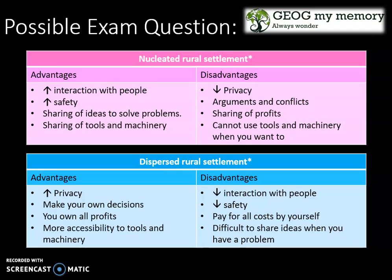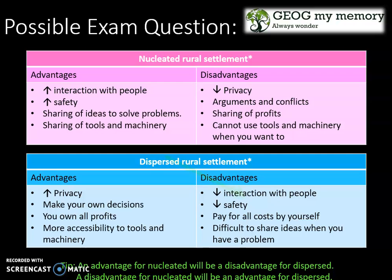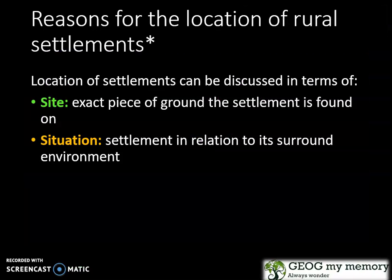Remembering these can be quite confusing, so here's a tip: an advantage for nucleated will be a disadvantage for dispersed, and a disadvantage for nucleated will be an advantage for dispersed. So if you learn one, you will automatically remember the other.